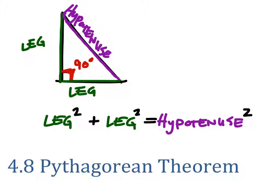Now, you may have heard this more commonly as A squared plus B squared equals C squared. Well, A and B represent the two legs, and the C is the hypotenuse in this thing.